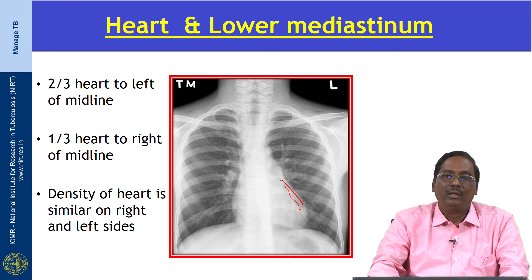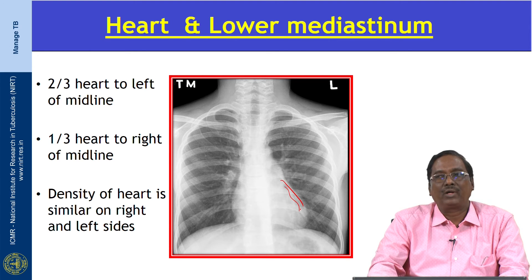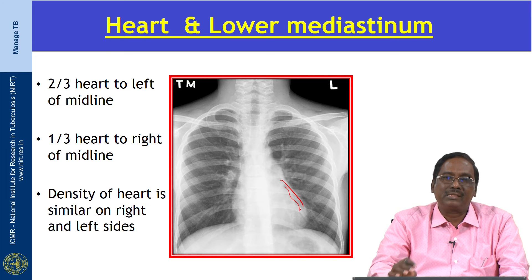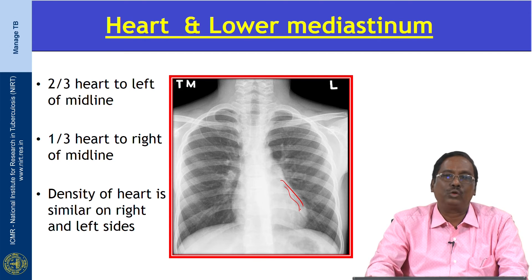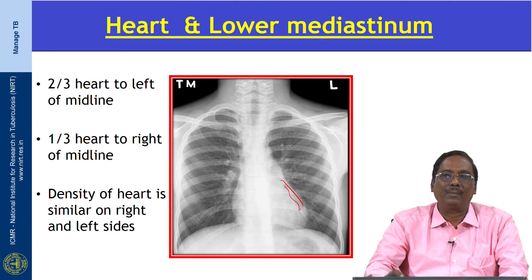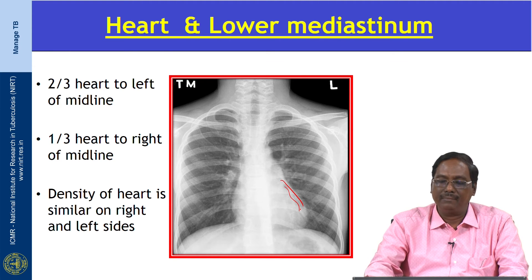In dextrocardia, two-thirds of the heart is on the right side, but the apex position is important. In true dextrocardia, the apex is oriented toward the right side.